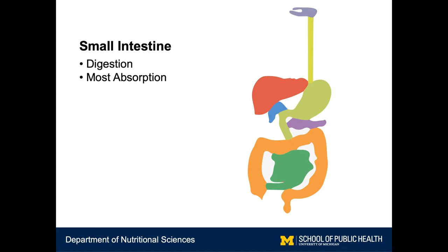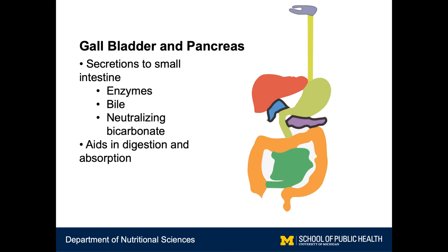However, the vast majority of digestion occurs within the small intestine. The small intestine is by far the largest part of our digestive system, and this is where most absorption occurs. Not only is the small intestine very long, but it has an extremely large surface area due to the villi that protrude into the lumen, increasing the surface area. The gallbladder and pancreas are two important accessory organs that help the small intestine do its job. They allow for secretion of enzymes, bile, and neutralizing bicarbonate. This bicarbonate neutralizes the acidic pH from the stomach to allow enzymes to function correctly, as most small intestine enzymes work best at a neutral pH.